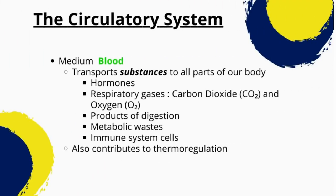The circulatory system refers to the system in the human body that is responsible for distributing blood, oxygen, and nutrients to various tissues and organs, and for removing waste products. The main purpose of the circulatory system is to deliver oxygen and nutrients to the cells and tissues of the body and to remove waste products from them. This ensures that all cells and tissues in the body have access to the resources they need to function properly.